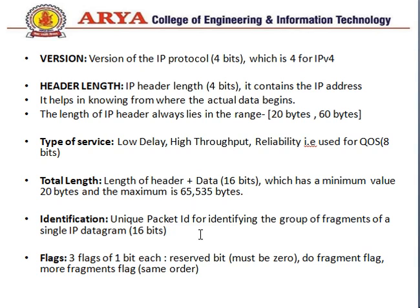Next are the flag bits — we have 3 flag bits. The first is 0, which is reserved and fixed. Next is the 'Don't Fragment' flag bit, and then the 'More Fragments' flag bit. These bits are set to either 0 or 1 depending on the condition. If the Don't Fragment bit is 0, the packet cannot be fragmented further; if 1, it can be fragmented further.